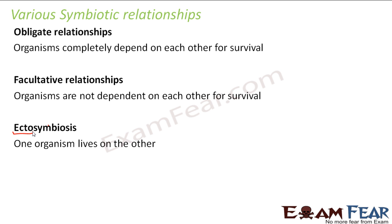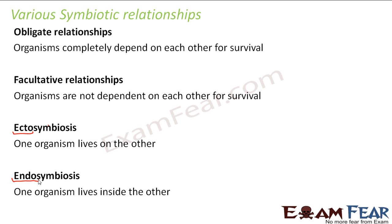Ectosymbiosis means one organism lives on the other organism. Endosymbiosis — where 'endo' means inside — means one organism lives inside the other. For example, bacteria sometimes live inside our body; that is endosymbiosis because one organism, the bacteria, is living inside another organism, the human being. These are the four types of symbiotic relationships.